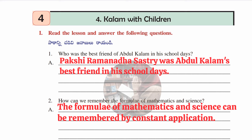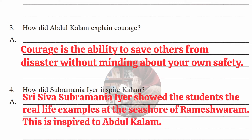Now the question and answers of the lesson. First: who was the best friend of Abdul Kalam in his school days? Answer: Pakshi Ramananda Sastri was Abdul Kalam's best friend in his school days. Second: how can we remember the formulae of mathematics and science? Answer: the formulae of mathematics and science can be remembered by constant application — meaning constant practice.